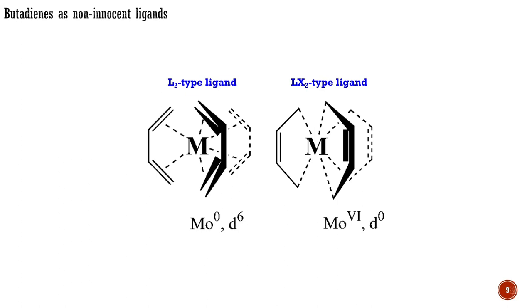For neutral ligands, such as butadiene, convention normally calls for the neutral form, L2-type ligand in this case. Yet structural studies on molybdenum show that butadiene often more closely resembles LX2-type ligand.